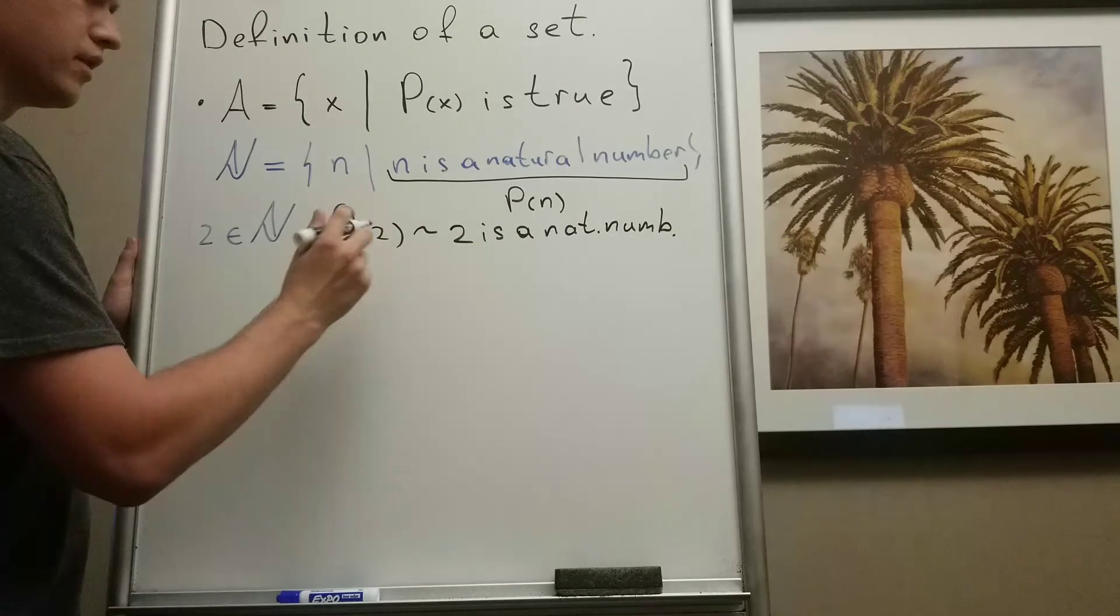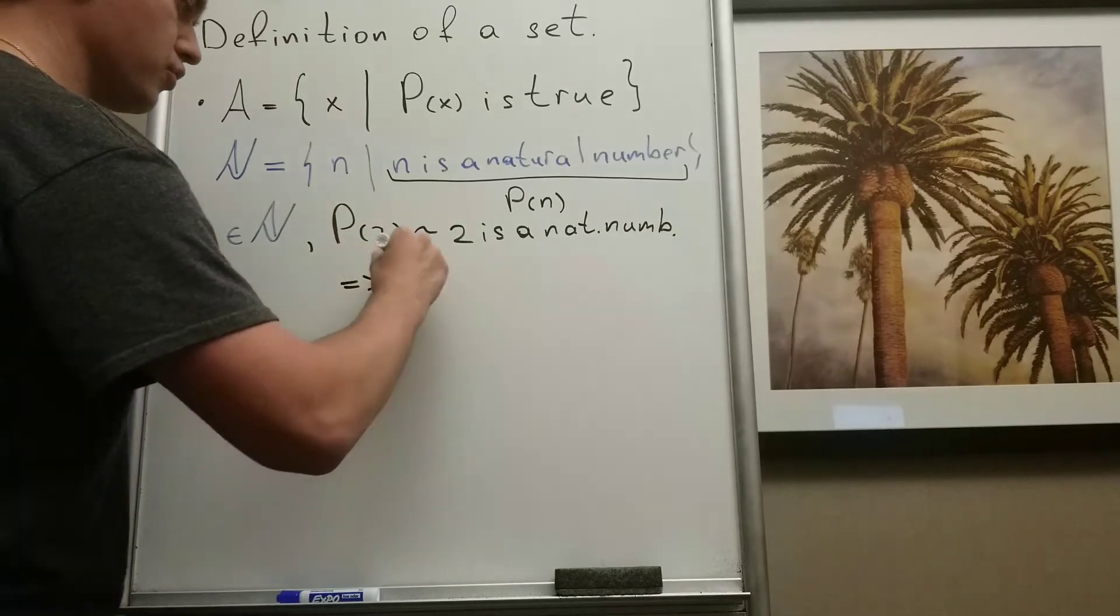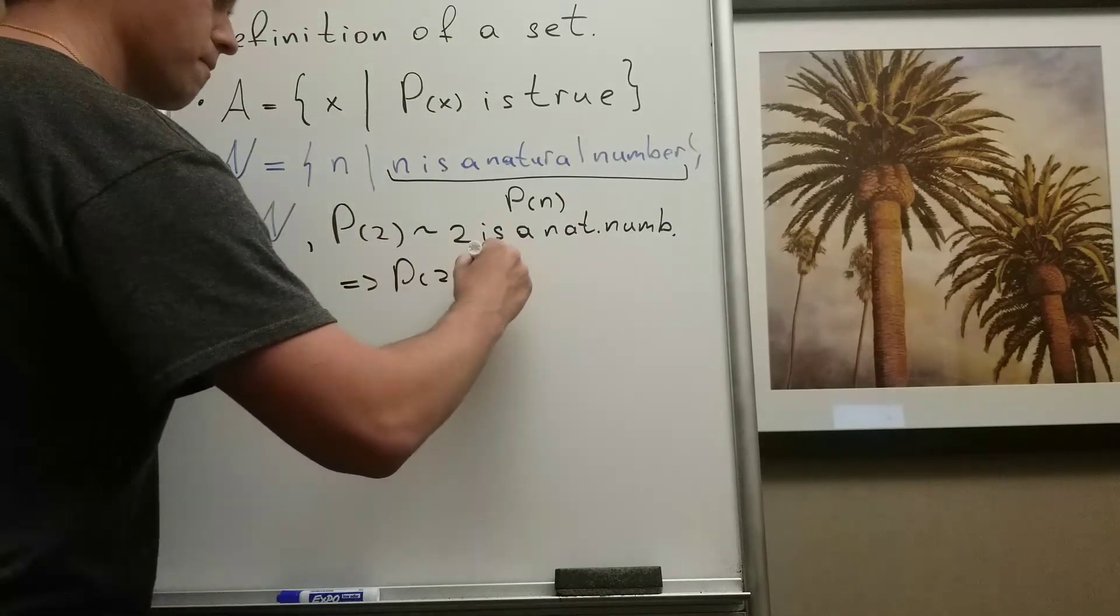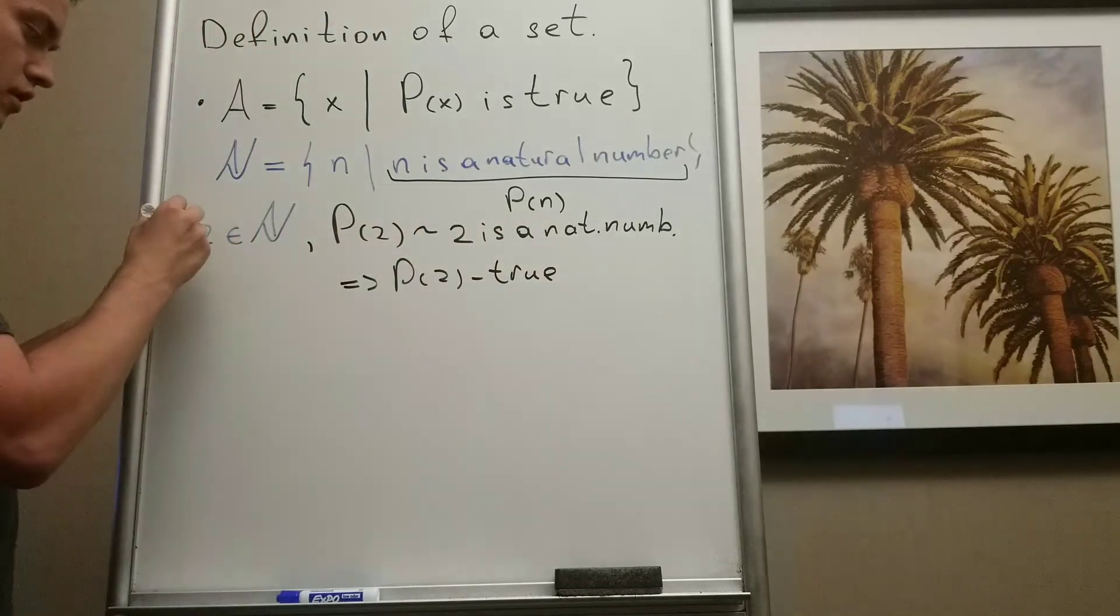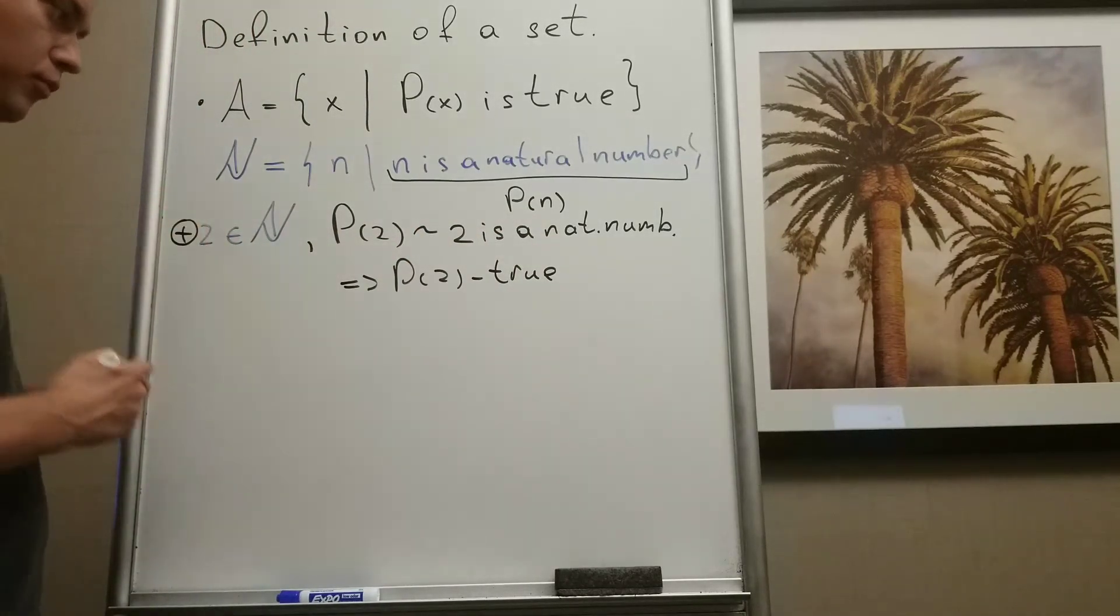So from here follows that P of 2 is true. So indeed, 2 belongs to natural numbers. But what about...